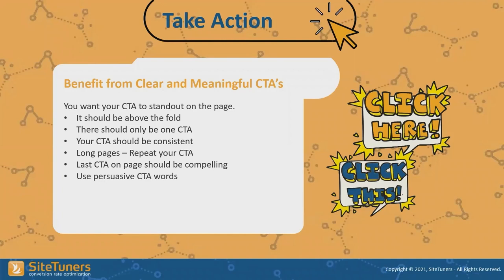There should be one primary CTA. You can have secondary and tertiary CTAs, but you need to visually distinguish between them so people know what makes sense. Your CTA should be consistent, and we'll show examples of where people have gone wrong on that.